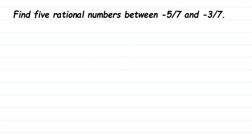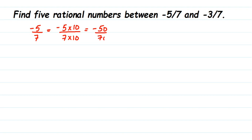There are two ways to find equivalent rational numbers: multiplying or dividing. We're not going to divide here because we'd get decimal answers, so we'll multiply. You can multiply with any number — I'm going to multiply by 10 because it's easy. Multiplying both numerator and denominator of -5/7 by 10 gives -50/70. For -3/7, multiplying by 10 gives -30/70.